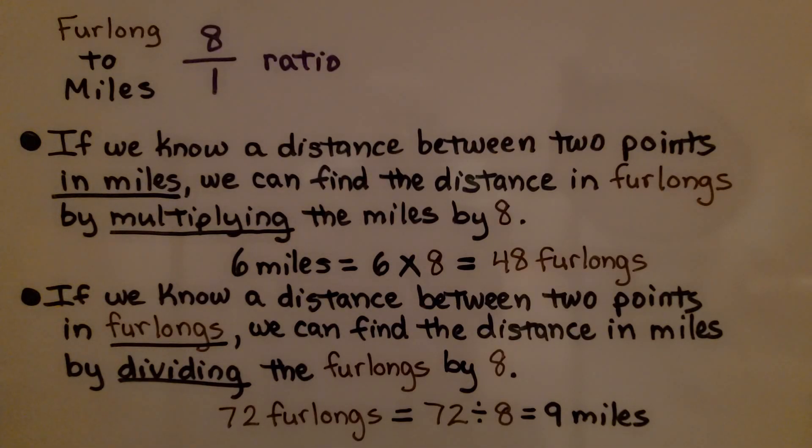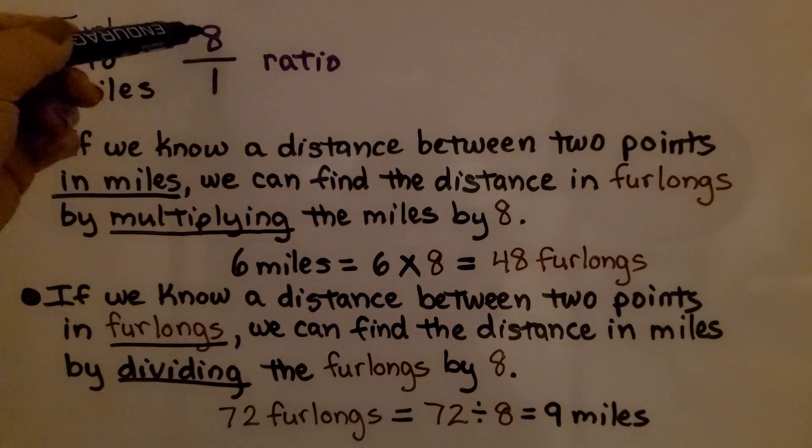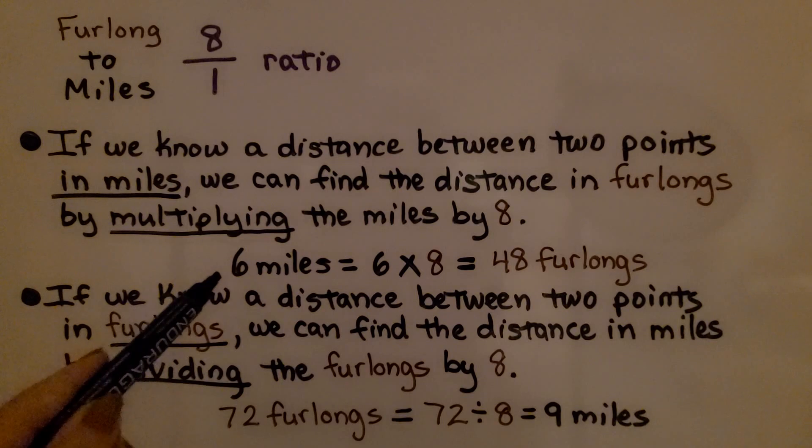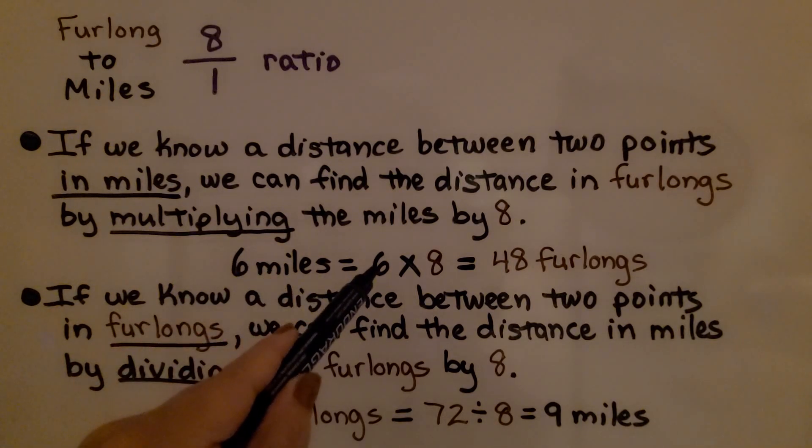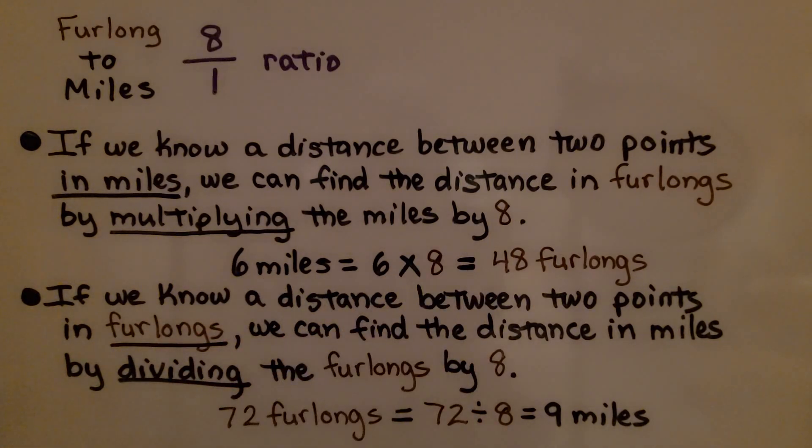So for furlongs to miles, we have an 8 to 1 ratio. If we know a distance between two points in miles, we can find the distance in furlongs by multiplying the miles by 8. If we have 6 miles, we can just multiply 6 times 8 and know that it's 48 furlongs.